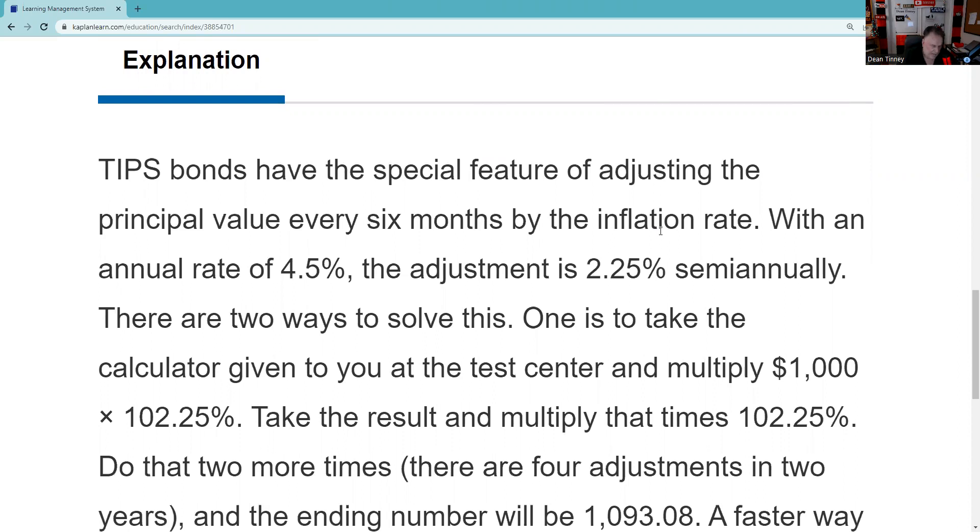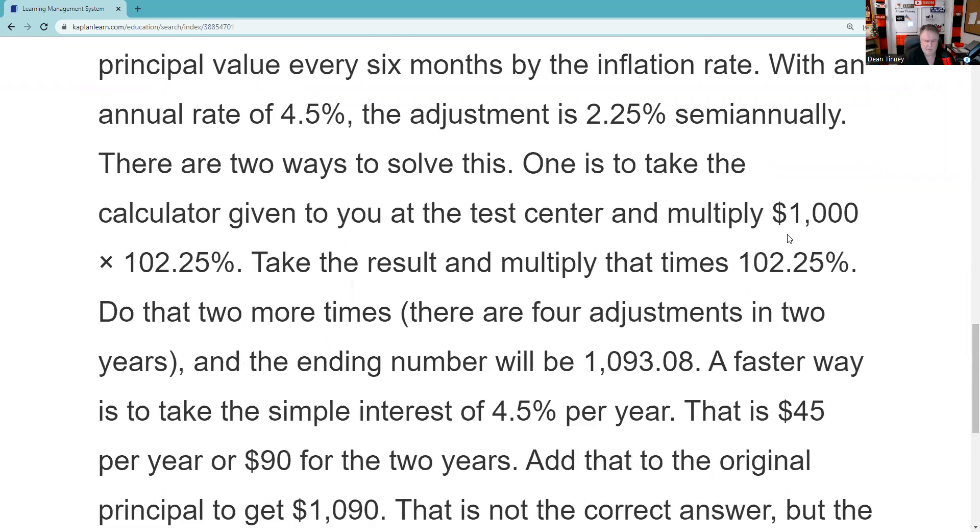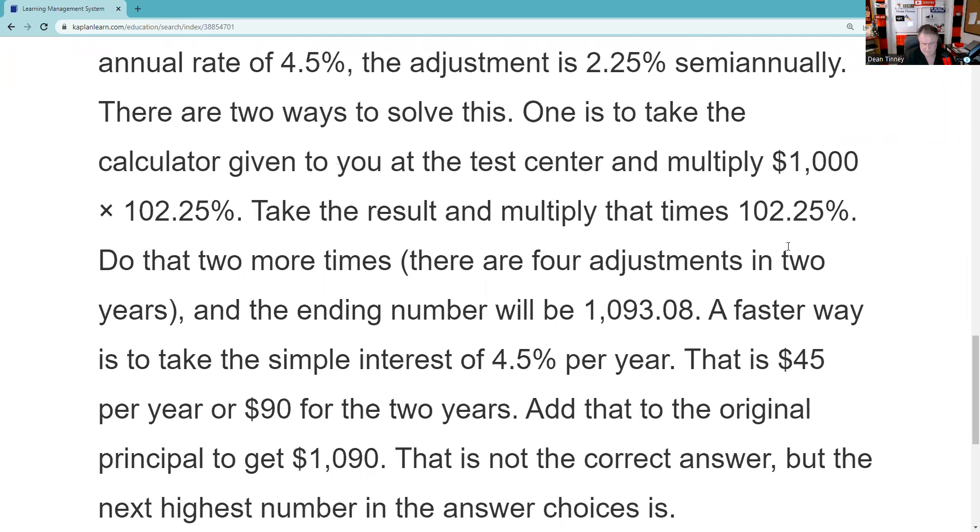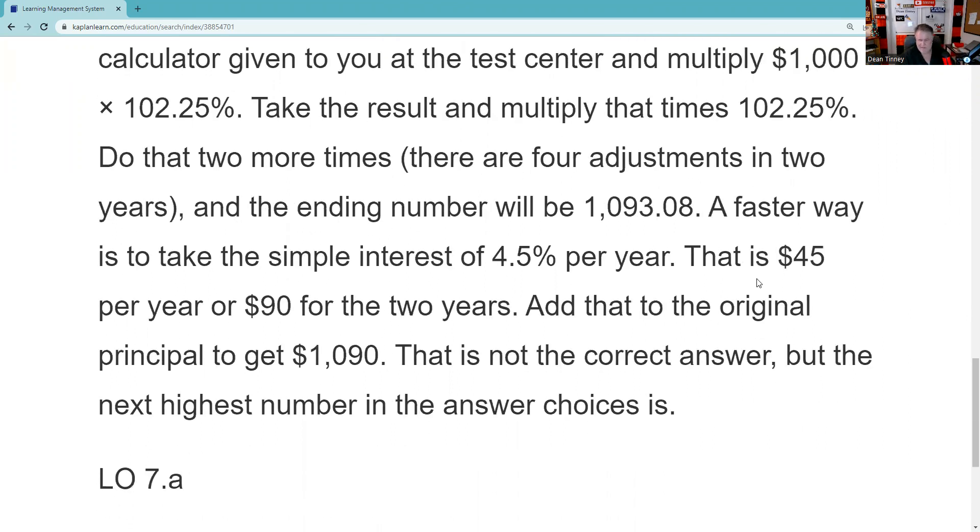There are two ways to solve this. One is to take the calculator. I'm terrible at arithmetic. I hate math. So I told you, I'm just a test taker. I'm going to always look for some kind of a shortcut, some kind of hack that gets me the answer without doing the math. So as I told you, what I would have done is said, I'm looking for something north of $1,090 because of the compounding. I think the test taker chose $1,090. So it would have worked had you just taken $1,090. You said, well, it's got to be a little more than that. Then the other way to do it, I just showed you the long way as well. You do that two more times. So four adjustments. That's what I showed you. Faster way is just to take simple interest, not compounding interest, and say that's $90 for two years, and then take the next highest.